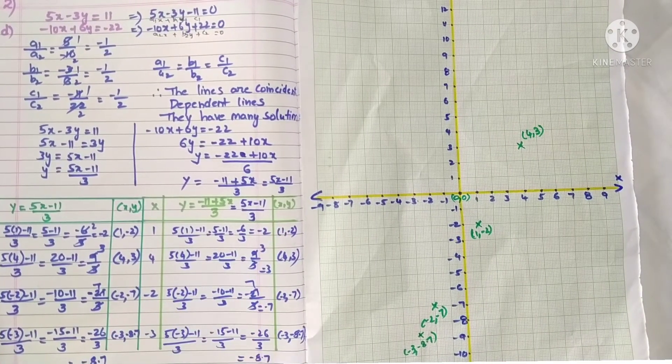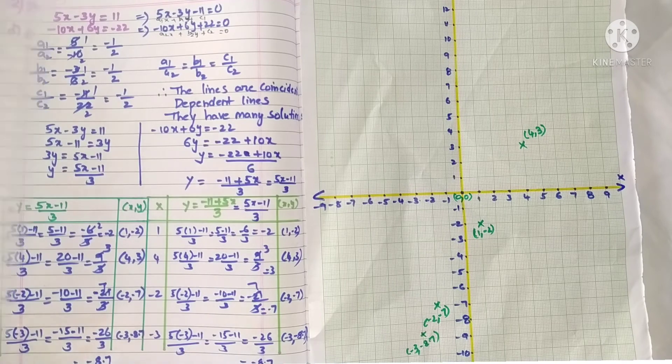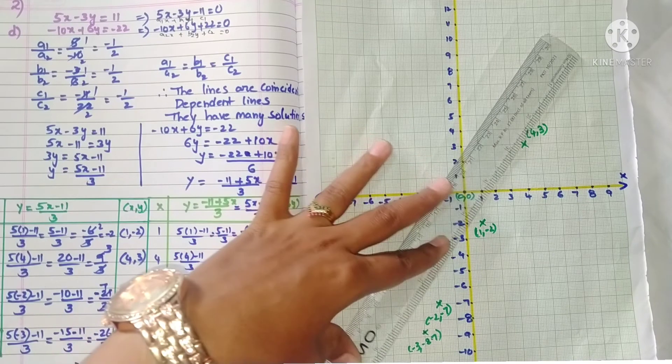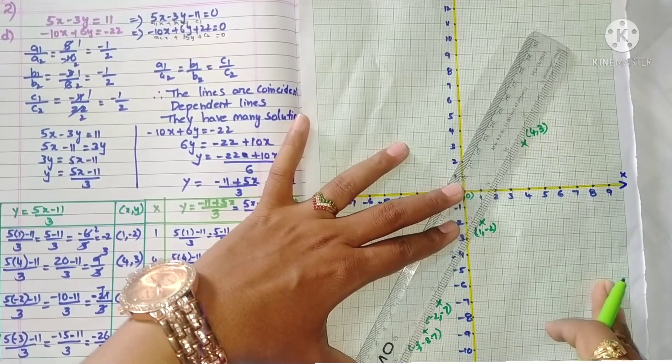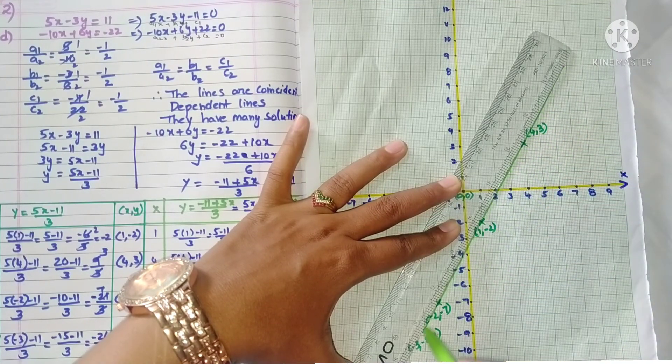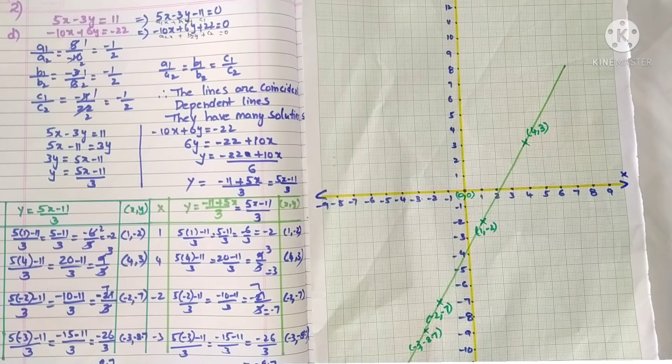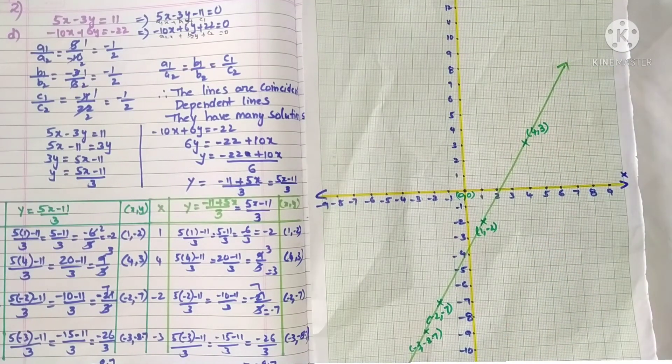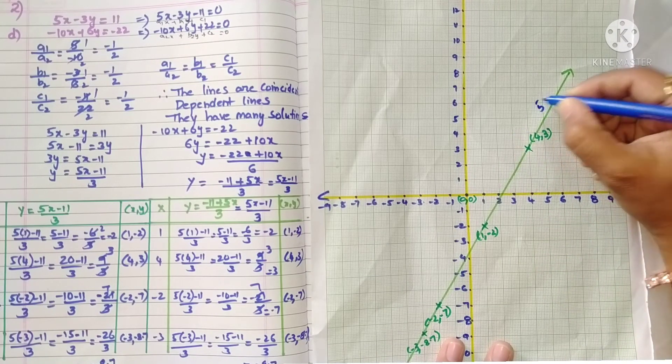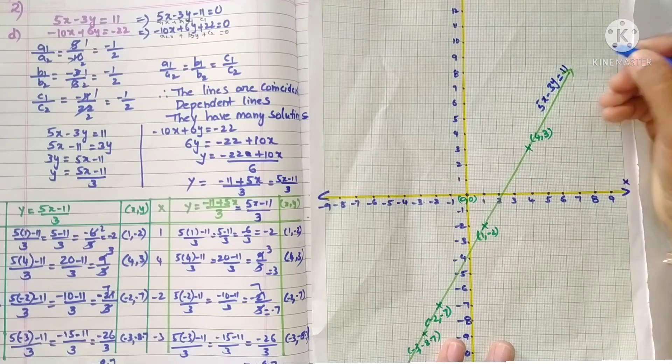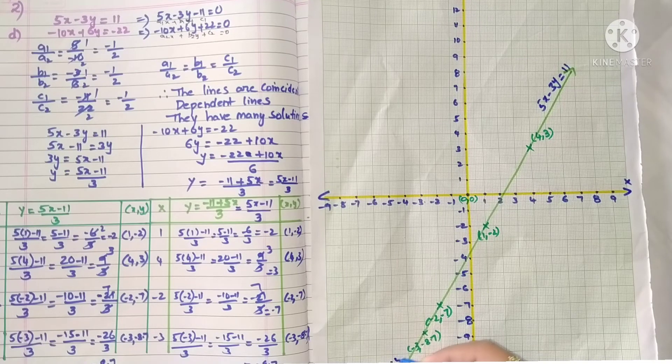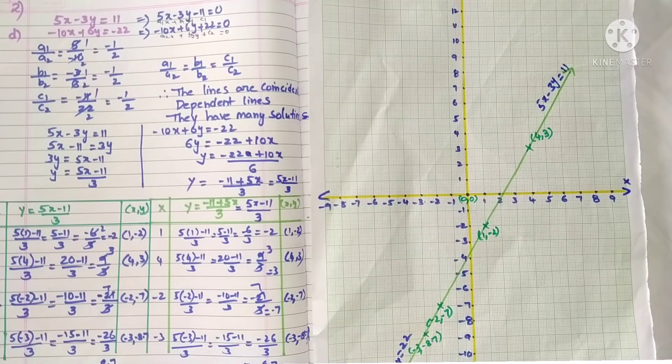Now join all these points with the scale. This is 5x minus 3y equals 11. Similarly, the second line is the same: minus 10x plus 6y equals 22.